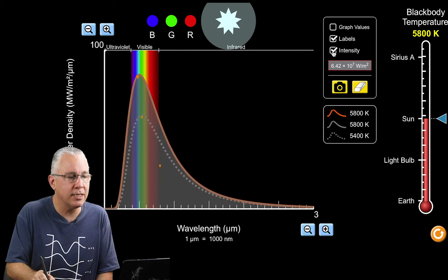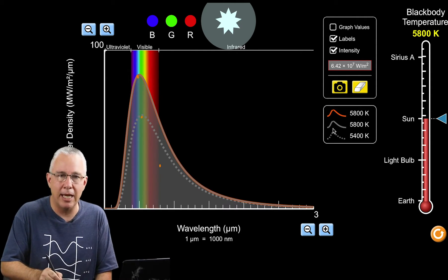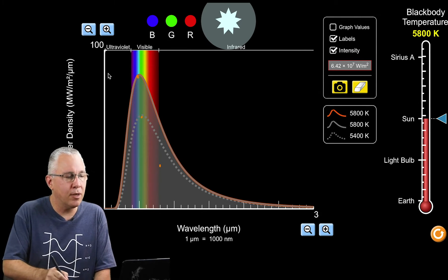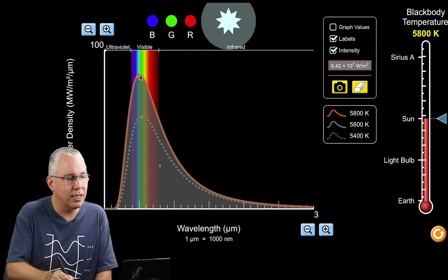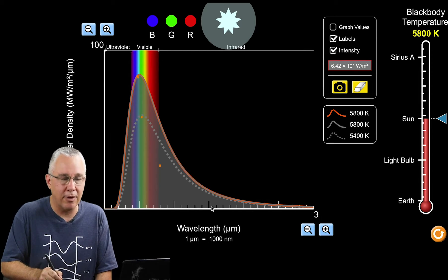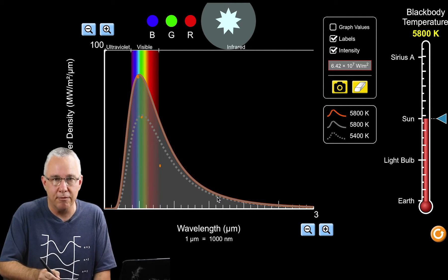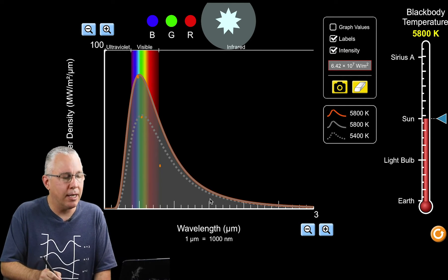If I turn this intensity on, you'll see the area underneath the graph. Since the scale tells us intensity per given wavelength, the total area under the graph is the total intensity of the light given off by the star.